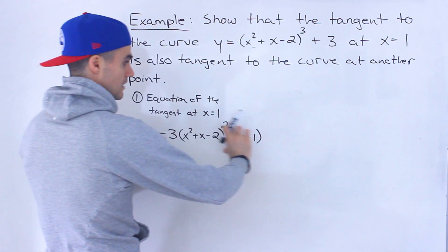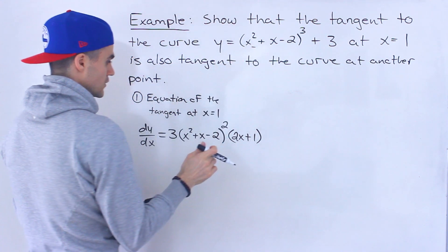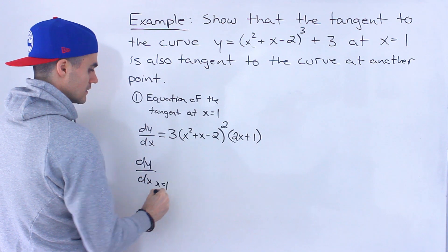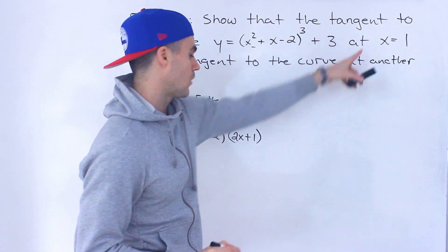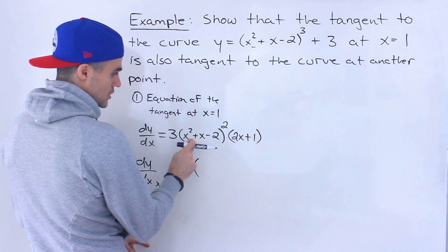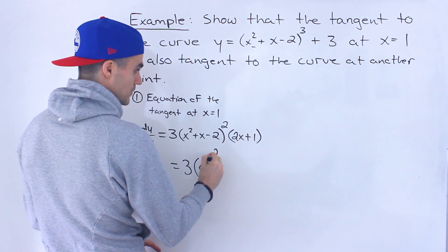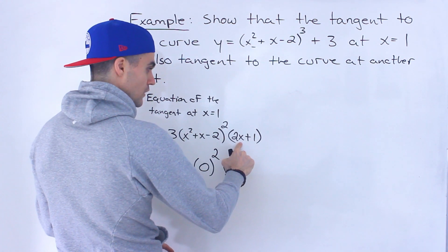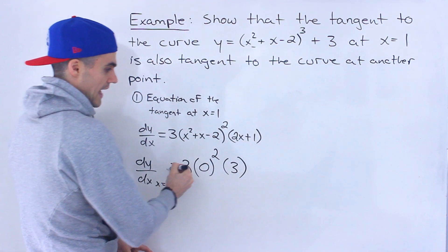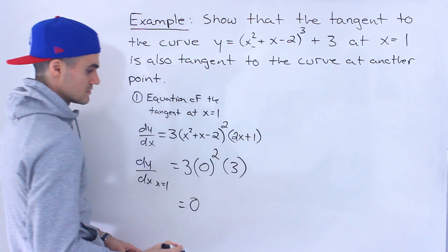Then we take the derivative of the inner function — the derivative of x squared plus x minus 2 is 2x plus 1. The plus 3 is a constant so its derivative is 0. This represents the derivative of the function, and we want to know its value at x equals 1. Plugging in 1: 1 squared plus 1 minus 2 equals 0, to the power of 2, times 2(1) plus 1 equals 3 — but because of the 0, the whole thing equals 0.